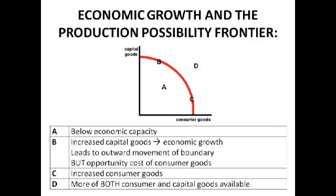Getting to point D is quite hard because it means pushing out the production possibility frontier — shifting it outwards. That requires finding more factors of production; for example, an increase in immigration would provide more labour, giving greater capacity to produce goods and services. It's basically the same as shifting the LRAS curve rightwards — that's what we want to do to get the best of both worlds.